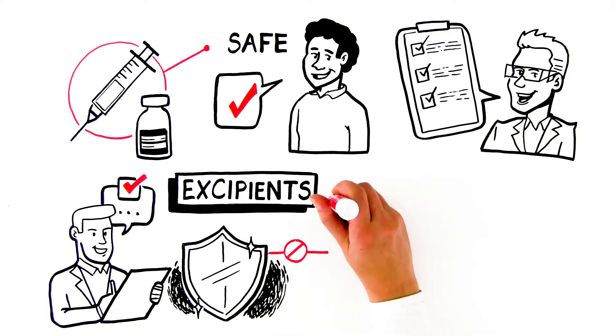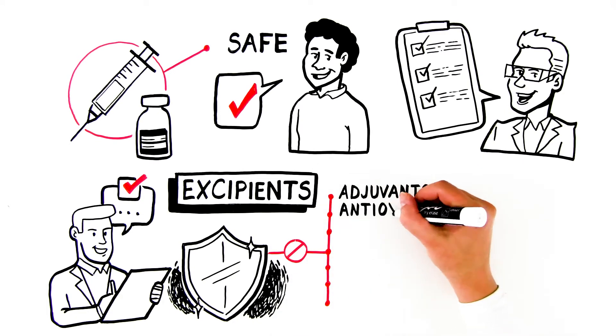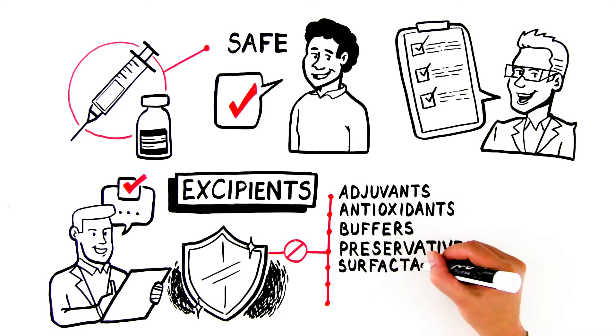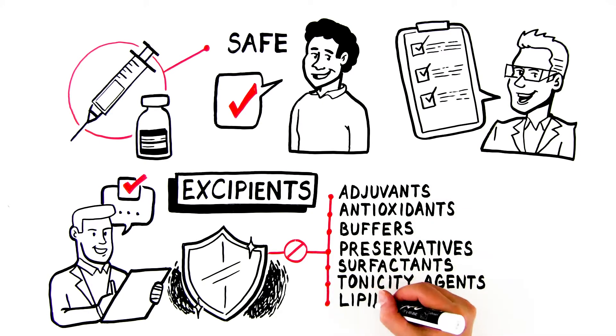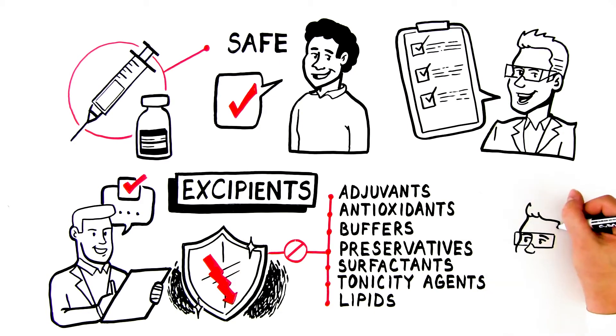Without the addition of excipients, which may include classes such as adjuvants, antioxidants, buffers, preservatives, surfactants, tonicity agents, and lipids, vaccines could lose stability, which could impact both efficacy and safety.